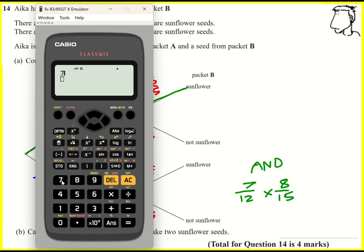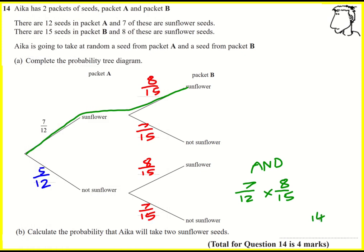Okay so 7 over 12 multiplied by 8 over 15. Calculator even simplifies it, 14 over 45. Non-simplified would be okay as well.